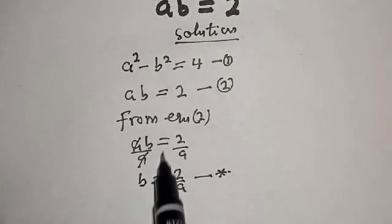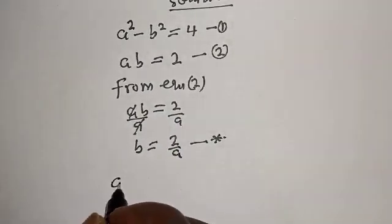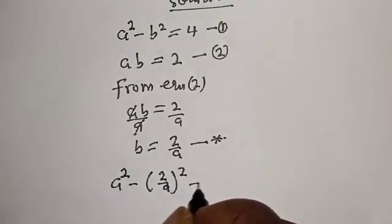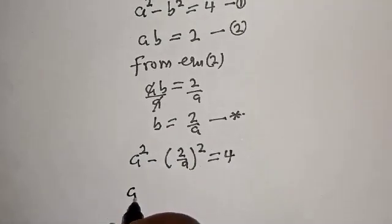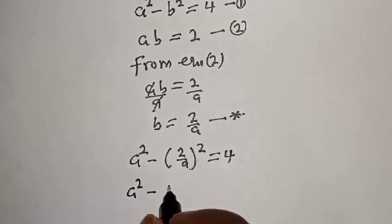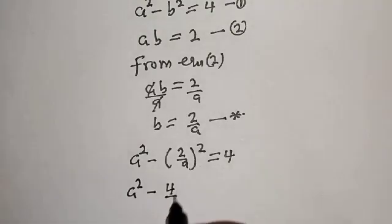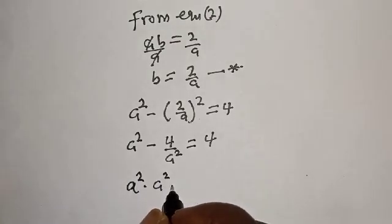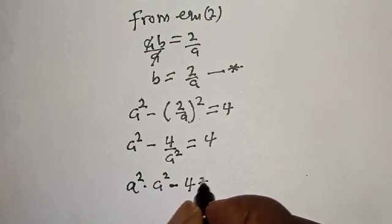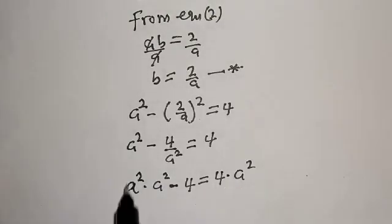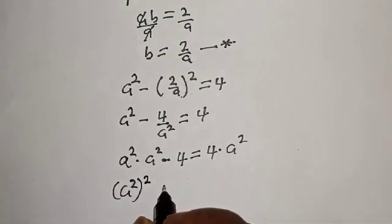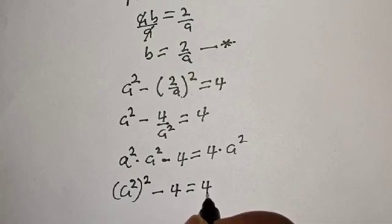Now let's substitute for b in equation 1. That is, a squared minus (2 over a) squared is equal to 4. This gives us a squared minus 4 over a squared is equal to 4. Multiplying through by a squared: a squared times a squared minus 4 is equal to 4a squared, which simplifies to a⁴ minus 4 minus 4a squared is equal to 0.